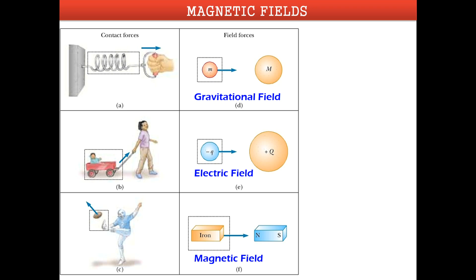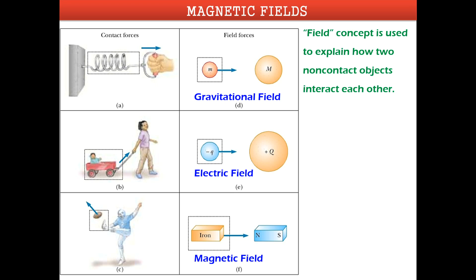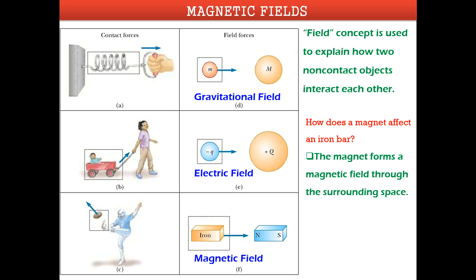A magnet or any electromagnetic source produces a magnetic field around it. If iron, cobalt, or any other magnetic material enters this magnetic field, it will be attracted by the magnet. The field concept is used to explain how two non-contact objects interact — when a magnetic material enters the magnetic field, it is affected or attracted by the magnet.